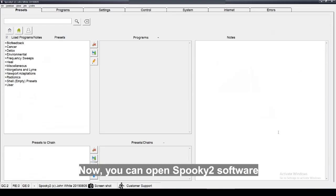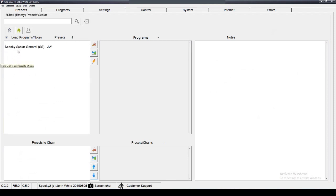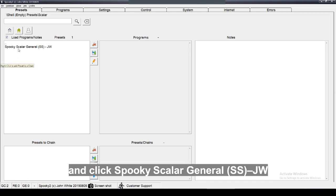Now you can open Spooky2 software. Go to the presets tab, choose shell preset Scalar, and click Spooky Scalar General JW.